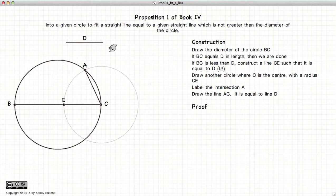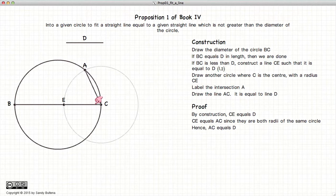And the proof of that is, by construction, CE is equal in length to D. And since EC and AC are radii of the same circle, then AC is equal to EC is equal to D. Hence, AC is equal to D.